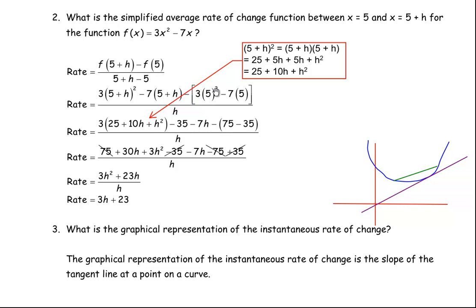Distributing the 3 in: 3 times 25 is 75, 3 times 10h is 30h, and 3 times h squared is 3h squared. Then minus 35 minus 7h. Taking the brackets off: this becomes minus 75 and plus 35. The minus 75 and plus 75 cancel to zero, and the minus 35 and plus 35 also cancel. So we're left with 3h squared, and 30h minus 7h is 23h. Both terms have h, so they divide evenly by h: 3h squared divided by h is 3h, and 23h divided by h is 23. So the average rate of change between x equals 5 and x equals 5 plus h is 3h plus 23.